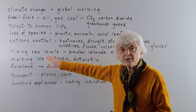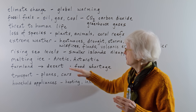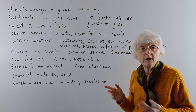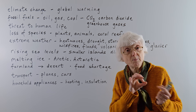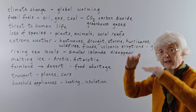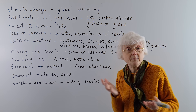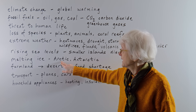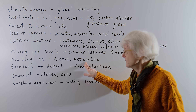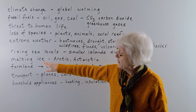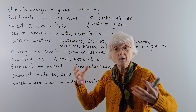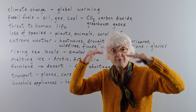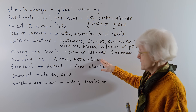Rising sea levels — the sea rising — partly because of ice melting. If you have smaller islands in places like the Pacific Ocean, there are a lot of little small islands that could disappear completely if the sea level comes up high enough. A lot of the melting ice is in the North Pole, the Arctic, and the South Pole, the Antarctic. Very big pieces of ice break off and float around in the sea, gradually melt, and they're helping to raise the level of the sea, which is another danger.